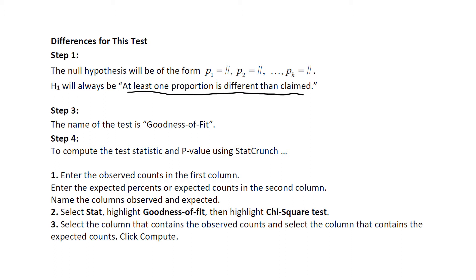In step three, the name of the test is goodness of fit. In step four, this is where we do the calculations. Enter the observed counts in one column and the expected percents or expected counts in the second column. Name the columns 'observed' and 'expected' — it makes them easier to pick when you're inside StatCrunch. Once you've typed those in, press Stat, then goodness of fit, then chi-square test. Select the column with the observed counts and the column with the expected counts, and click compute. If all the proportions are the same, we can just tell StatCrunch that they're all supposed to be equal, as I'll show in example two.